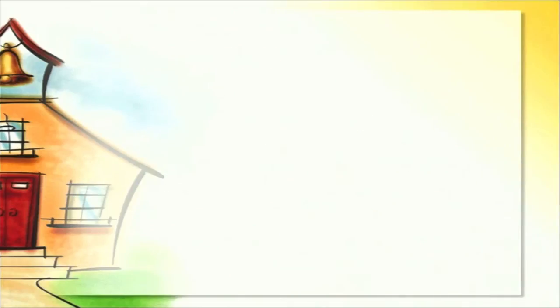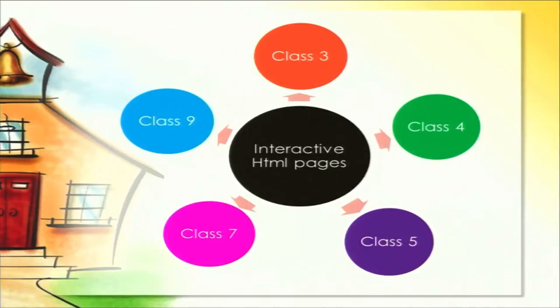Starting with the first objective, we have created around 80 HTML pages for chapters of classes 3, 4, 5, 7 and 9. These HTML pages have been made interactive by linking them to JavaScript files — we have an answer box for each question and the child can put the answer in the box and verify whether his answer is correct or not.